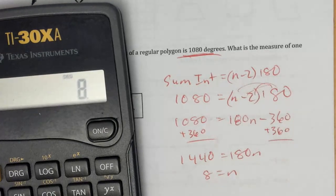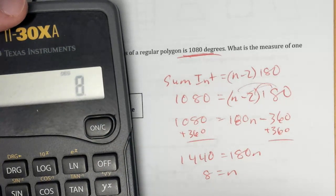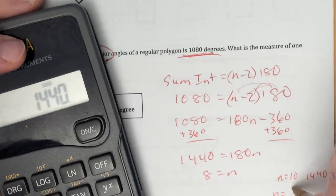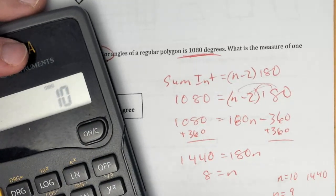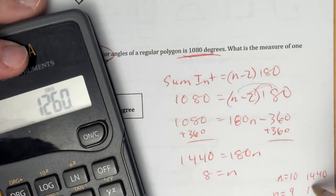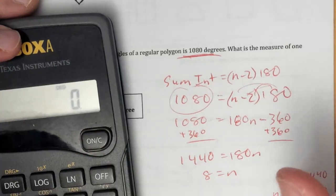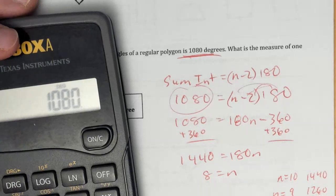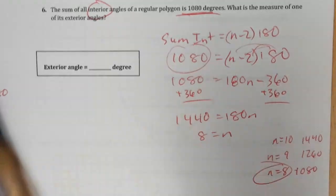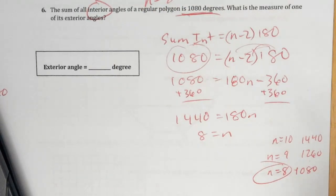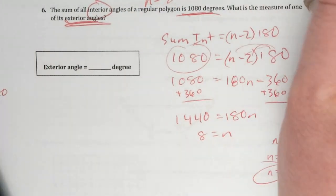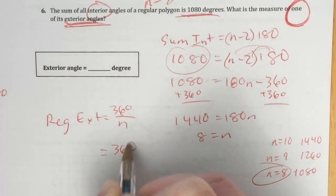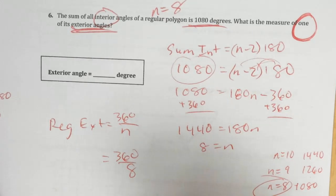Or you could just keep plugging numbers in for N to see what you get. Trying N equals 10: 10 minus 2 times 180 gives 1440 — didn't work. Trying N equals 9: 9 minus 2 times 180 gives 1260. Trying N equals 8: 8 minus 2 times 180 gives 1080 — that's the one. But we still didn't answer the question: they wanted the measure of one exterior angle. Regular exterior equals 360 over N, so 360 over 8 equals 45 degrees.